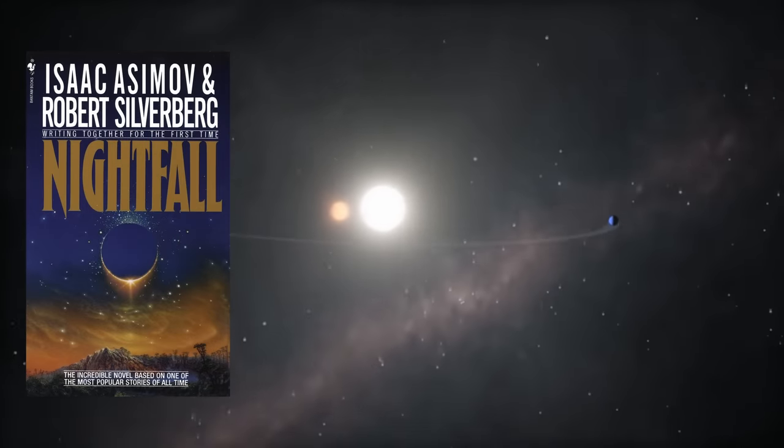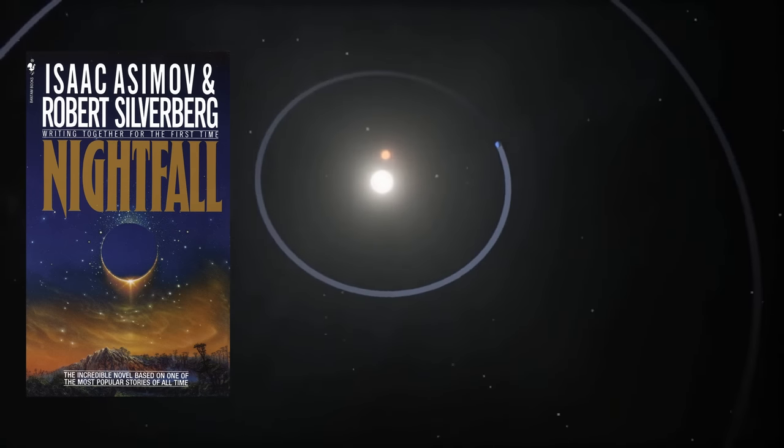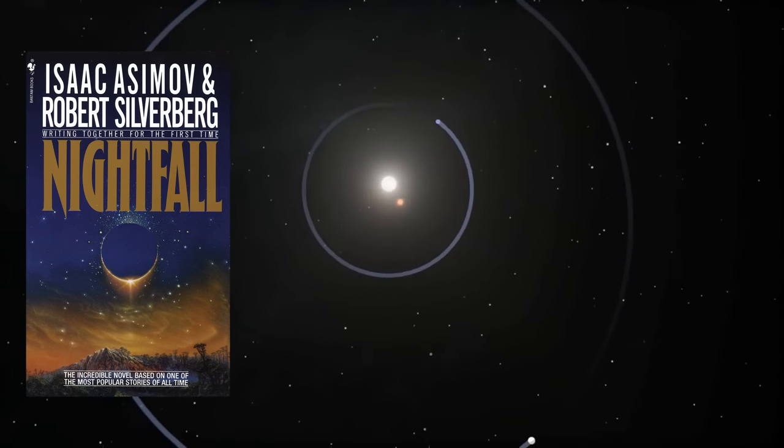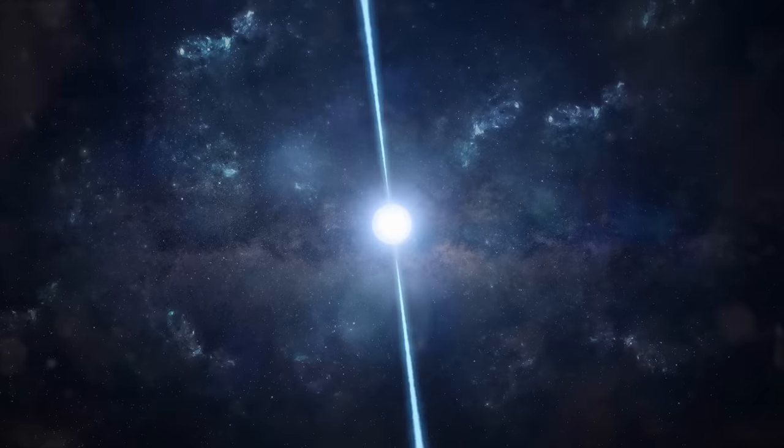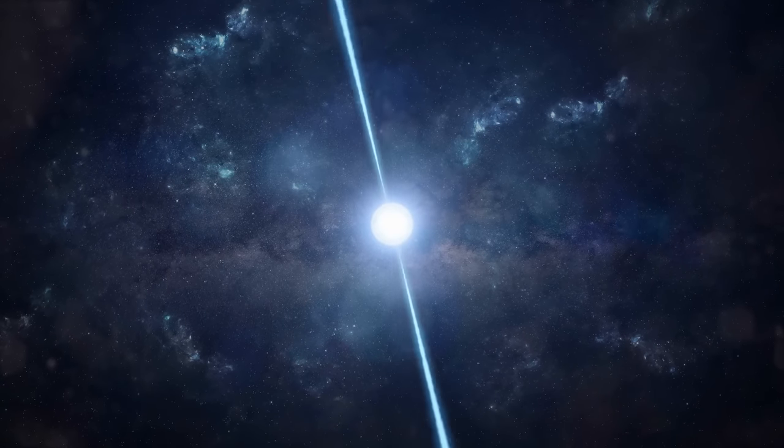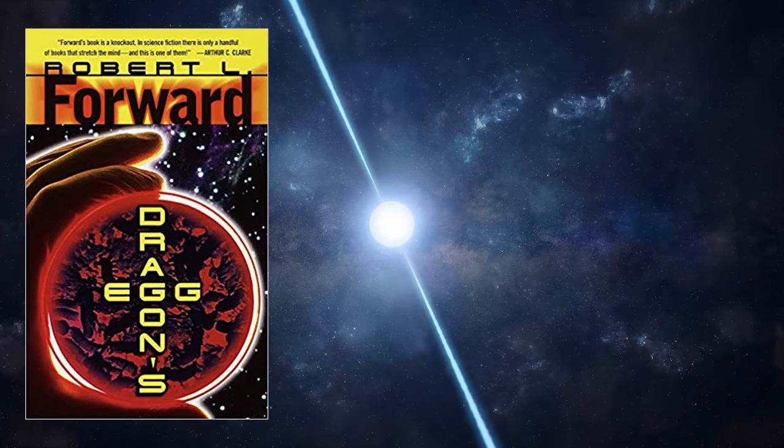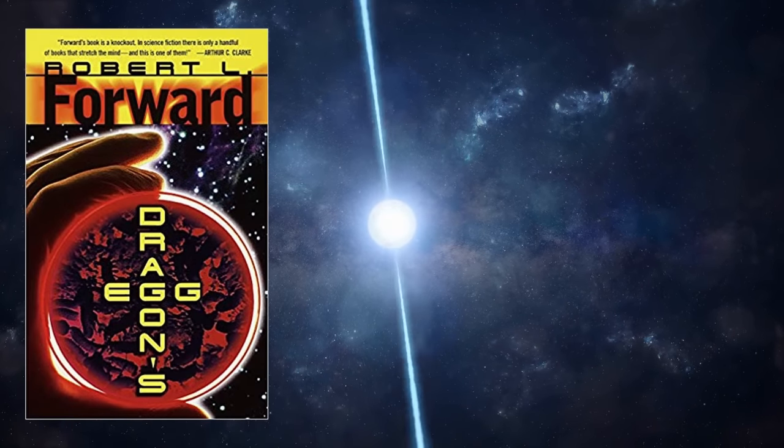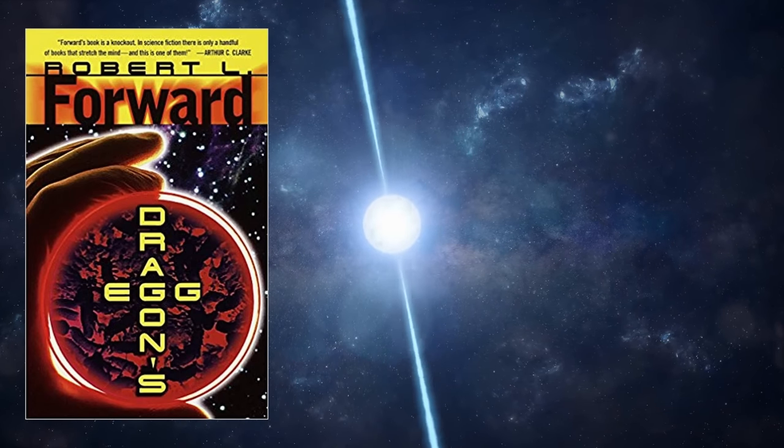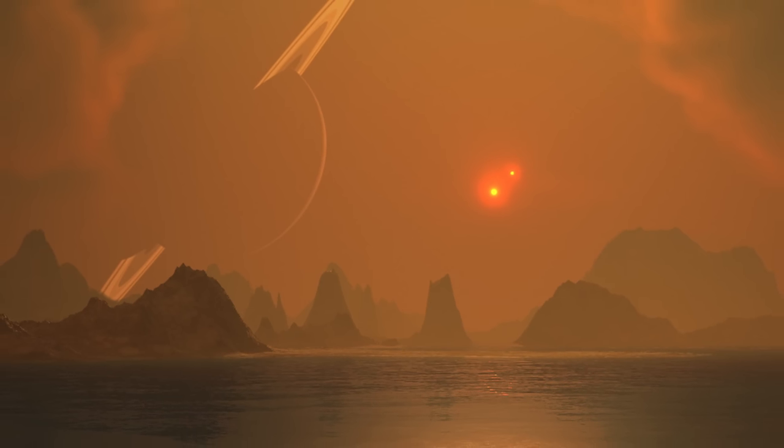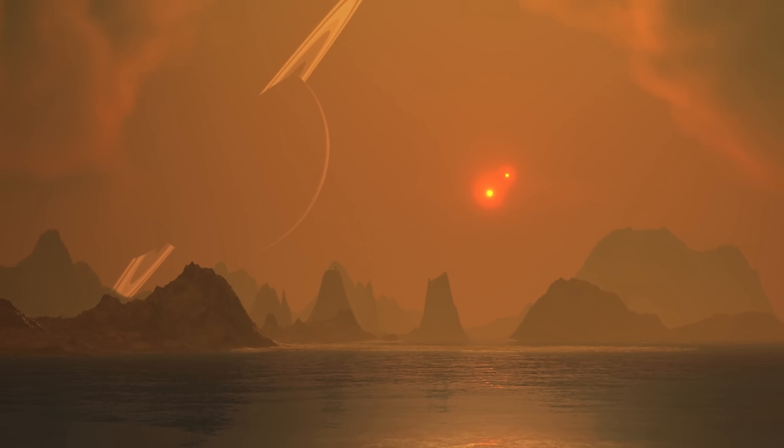Isaac Asimov's classic novel Nightfall comes to mind, about a civilization that has six stars lighting their planet. Of course we can't really have a real idea what conditions are truly antithetical to life, or intelligent life, and Robert Forward's equally classic novel Dragon's Egg even explores how life might evolve on a neutron star, so we are essentially speculating beyond what we know about Earth's life and our assumption that intelligent life evolves rarely.